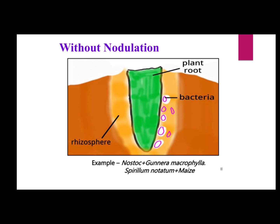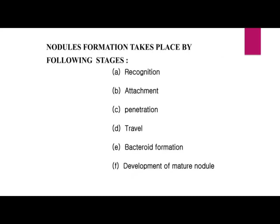In nitrogen fixation without nodulation, bacteria present in the soil accumulate in the rhizosphere where nitrogen is fixed. In symbiotic nitrogen fixation there is an association between Rhizobium and a leguminous plant, and nodule formation is the first stage of nitrogen fixation.